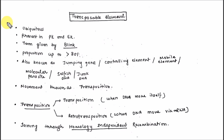When any particular segment of DNA changes its position in the gene or chromosome, it is known as transposable elements or transposons. We need to study transposable elements because they are very important — they alter the genetic behavior in the chromosome.